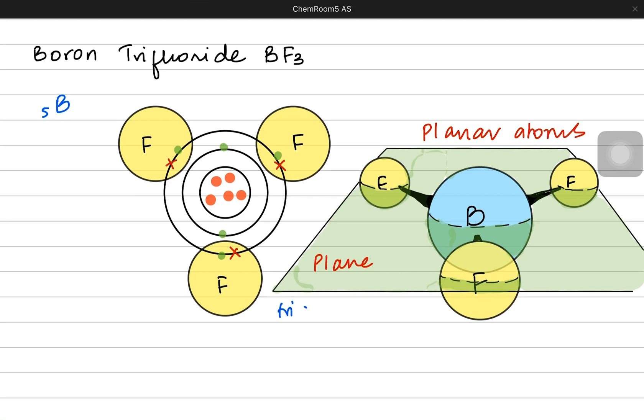The shape is known as trigonal planar because there are three corners of this molecule and all the corners lie on the same plane. These three atoms have their bonds 120 degrees apart from each other. Because these atoms are on a triangular structure.